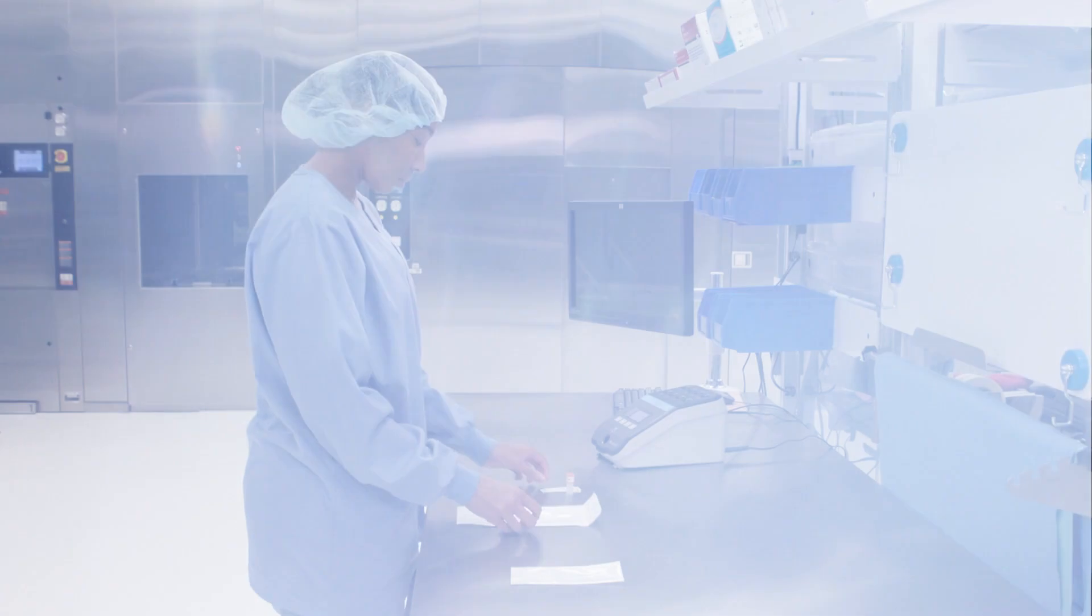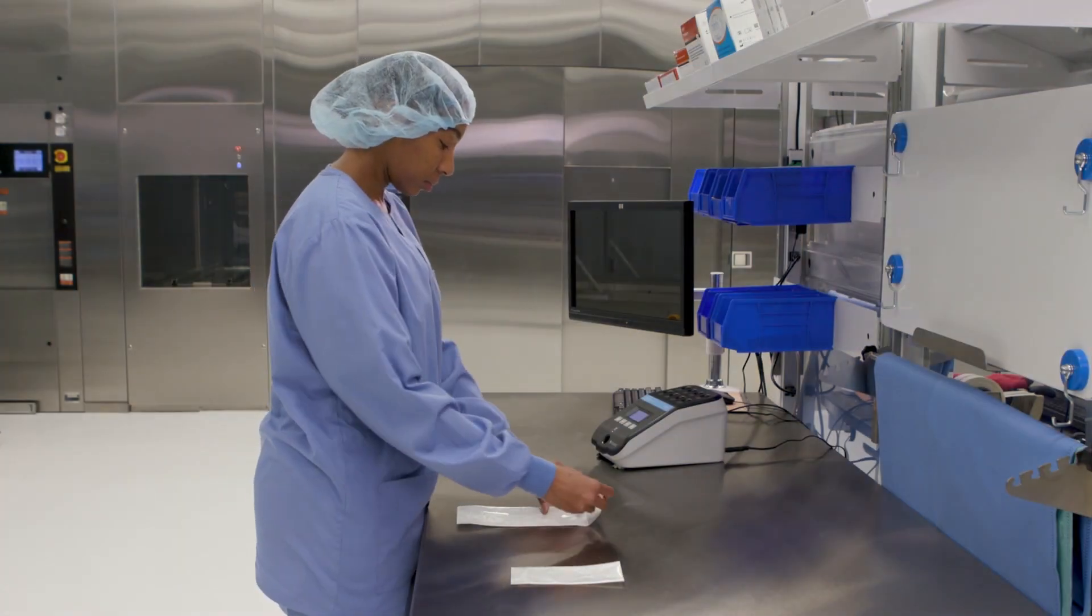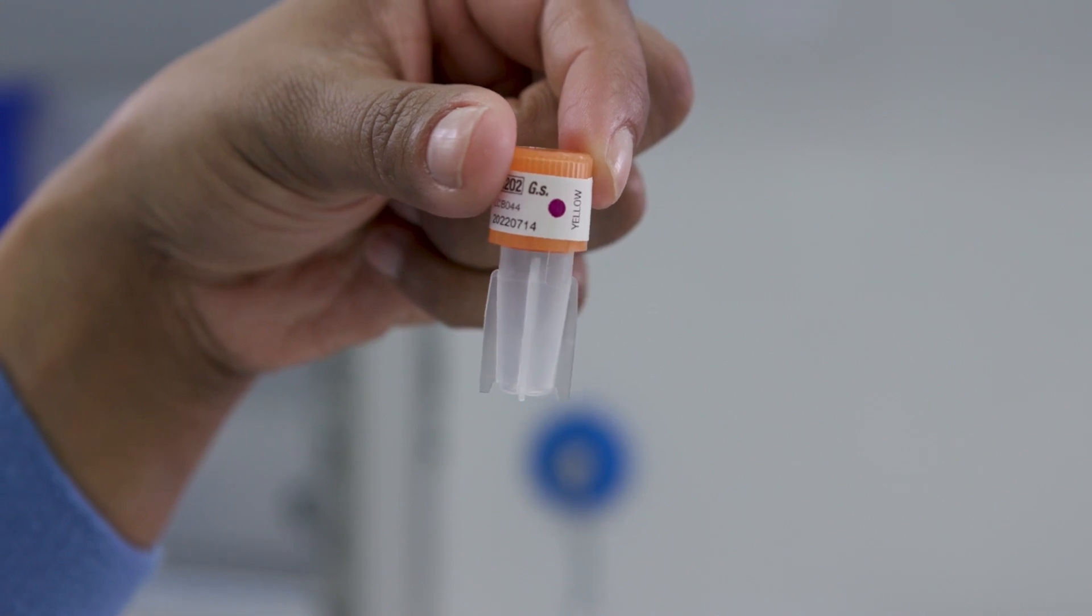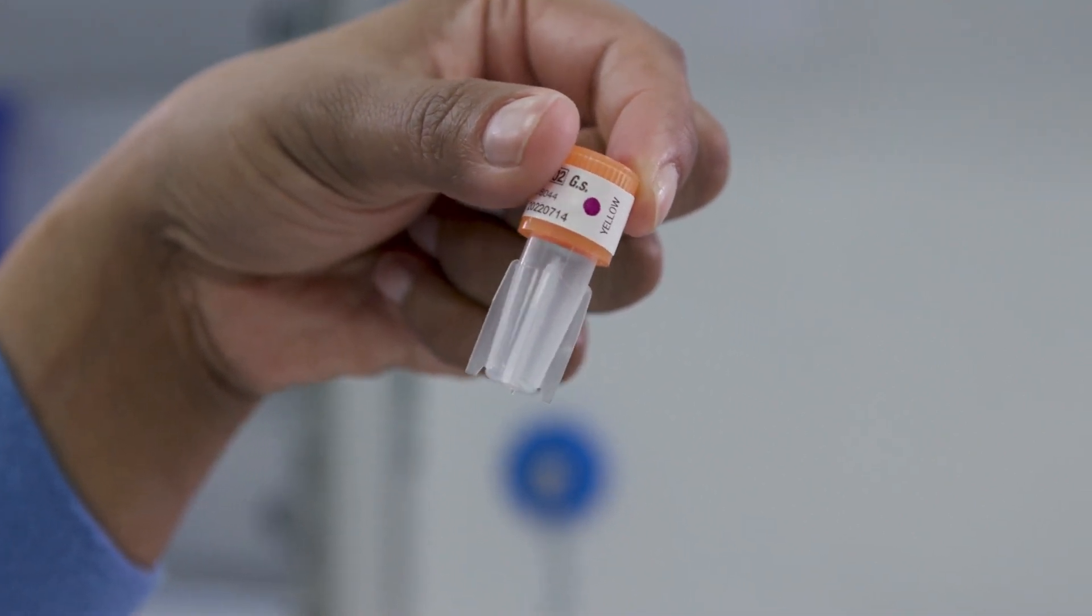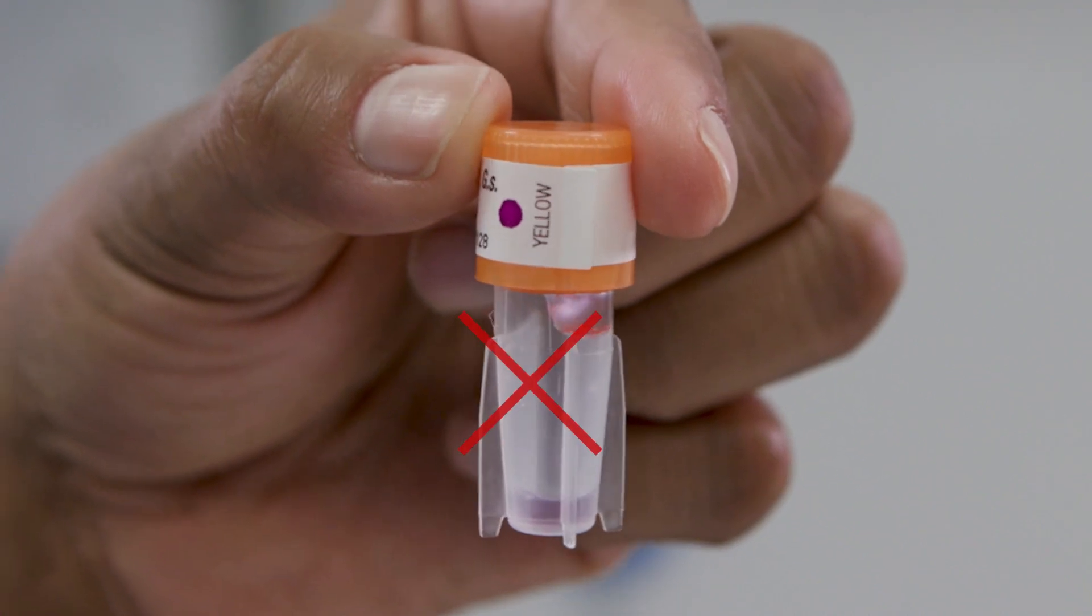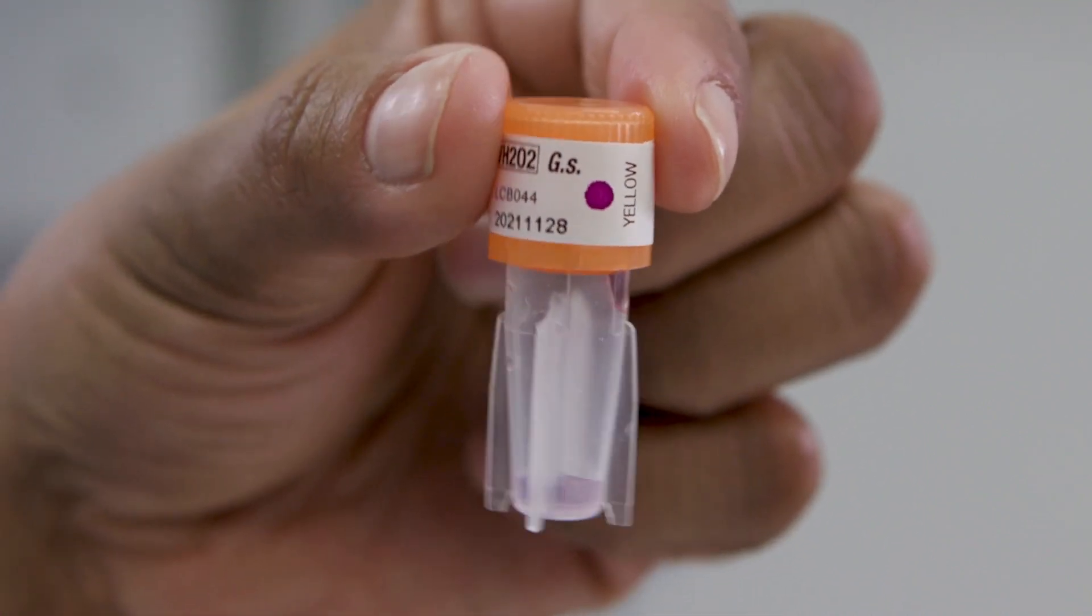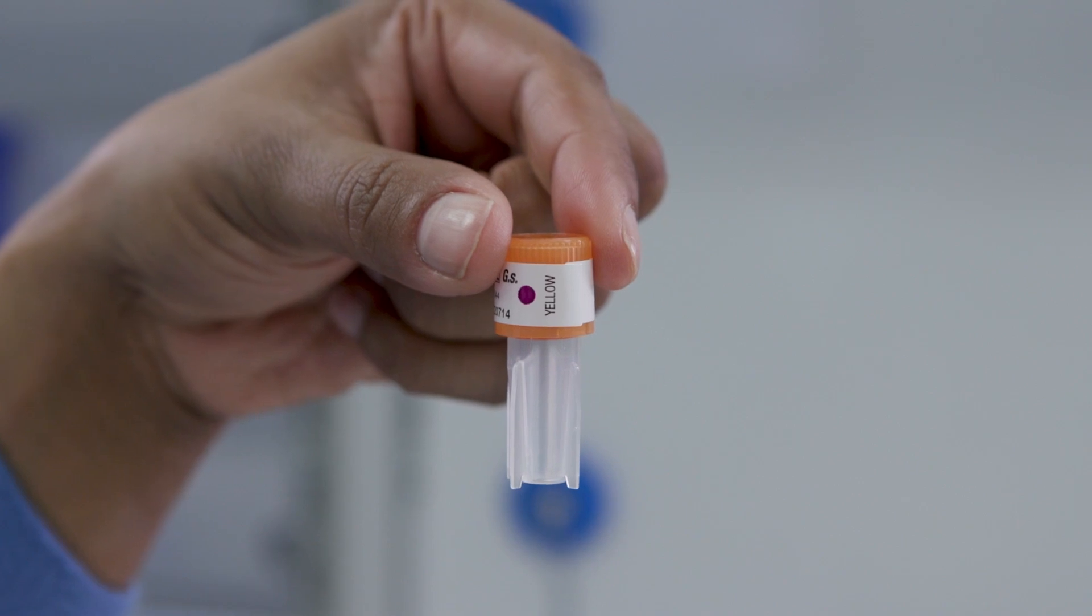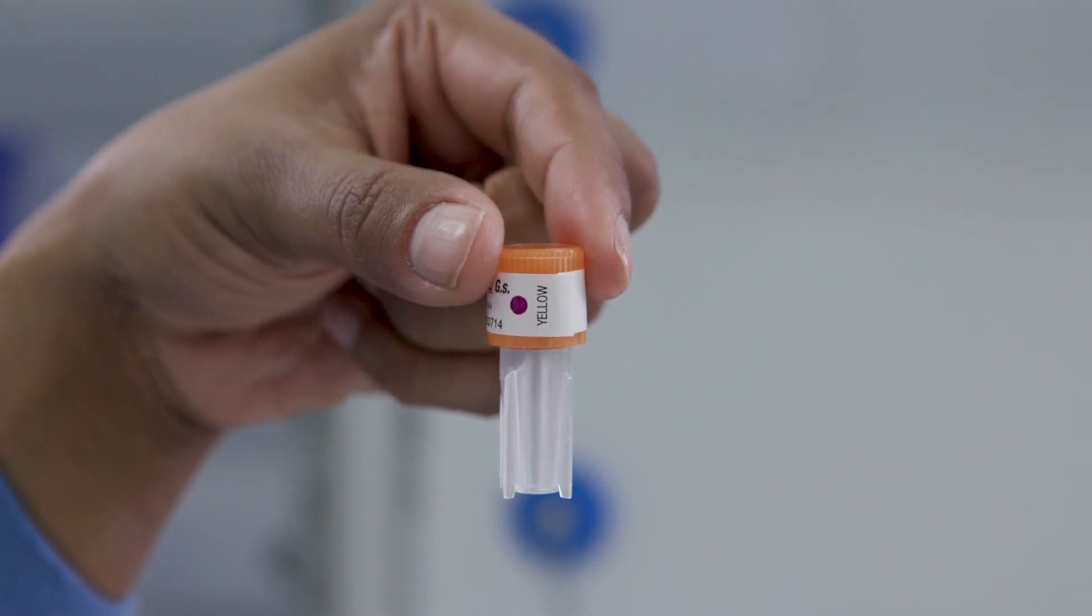To perform routine monitoring, the Celerity HP BI must be used within an appropriate test pack in a loaded chamber. Prior to using the BI, inspect the vial to ensure the media-filled cap has not been prematurely activated. No media should be present in the vial prior to activation. Inspect the process indicator label on the cap and confirm the indicator color is magenta.